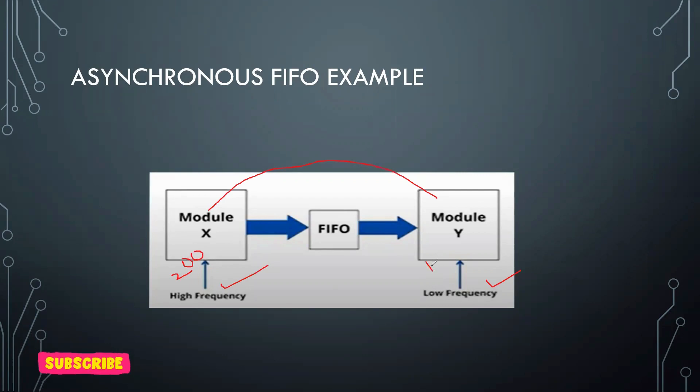There are chances that the data sent by X will not be received properly by Y because they are working at different frequencies. Some data may be lost because it is working at 200 megahertz and this is working at 100 megahertz. So we can say that 100 mega number of bits can be lost during this transaction. To avoid that, we are using a FIFO in between these two, which is temporarily storing the data and then transferring to module Y. This is a simple example of asynchronous FIFO.